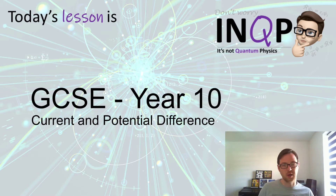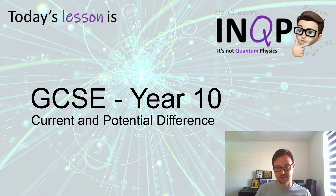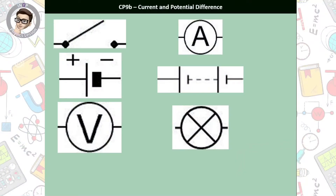Hello Year 10, we're going to have a look at current and potential difference today, following on from the previous lesson. So before we go any further, let's have a quick quiz to start with. I'd like you to pause the YouTube video here. Can you name the six different components on the screen? You are expected to be able to name all of these different components for the exam.